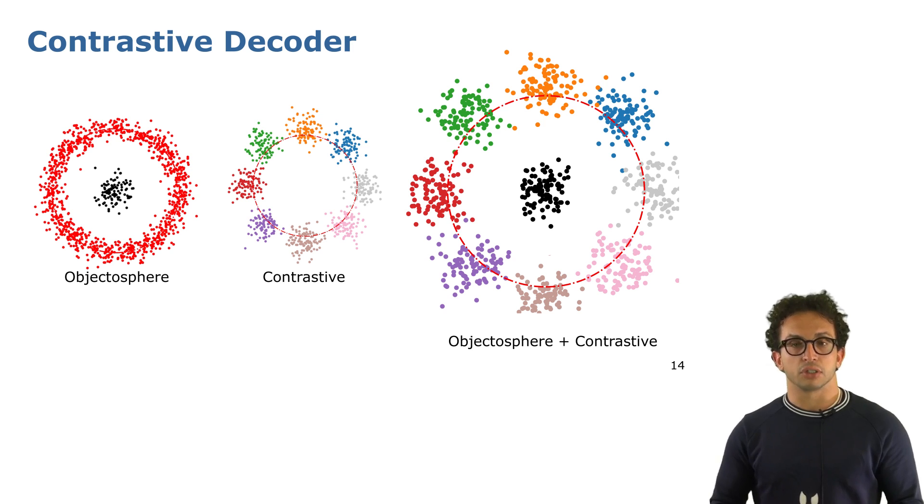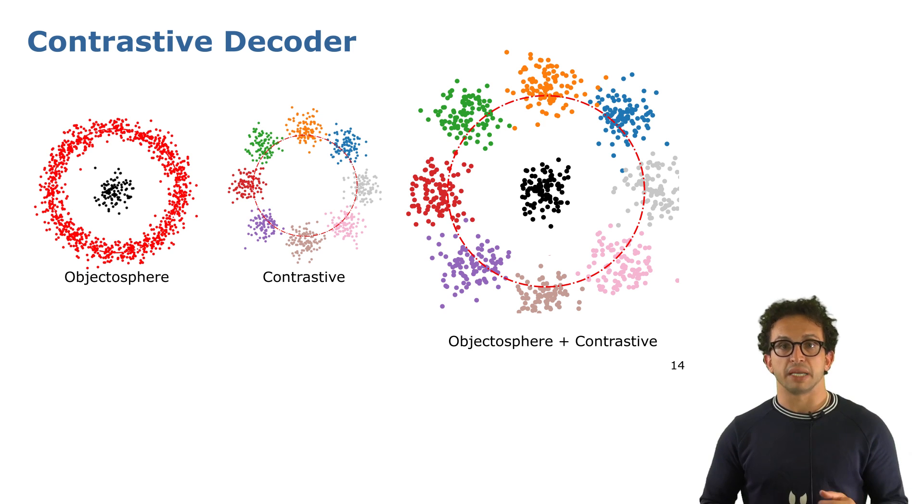The unknown score coming from the contrastive decoder is just distance based from the center, so the closer we are to the center, the more sure we are that we're looking at the unknown class, and vice versa.